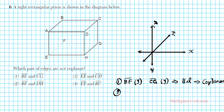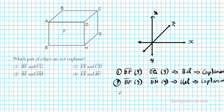Option 3: segments EF and CD. EF is going in the Z direction — back and forth. CD is also going back and forth in the Z direction. Since they're going in the same direction, they're parallel. And if they're parallel, that implies they're coplanar as well.